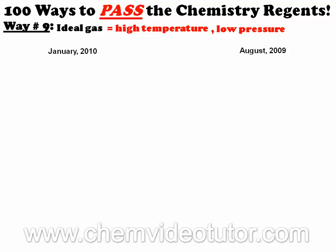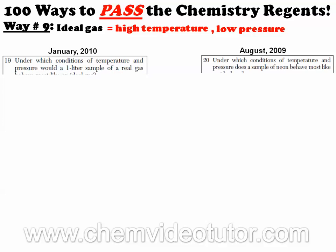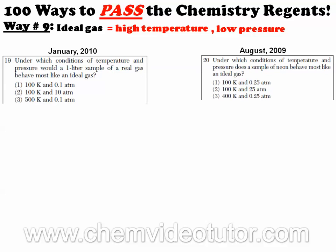If you take a look at these two questions, they both ask about the behavior of an ideal gas in terms of temperature and pressure. We can quickly eliminate the first two choices for each question since we need a high temperature. We then decide which of the remaining choices have the lowest pressure, and those will be the correct answers.